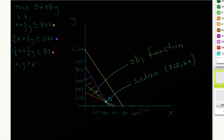I have a problem here with a solution already. The problem is to maximize 5x plus 8y subject to the following constraints: x plus 2/3 y ≤ 800; 1/2 x plus 1/3 y ≤ 280; and 1/8 x plus 1/4 y ≤ 80. And of course we have our non-negativity constraints.